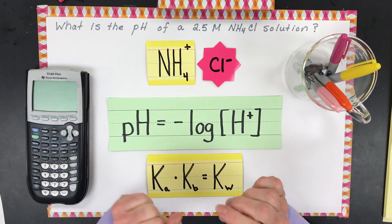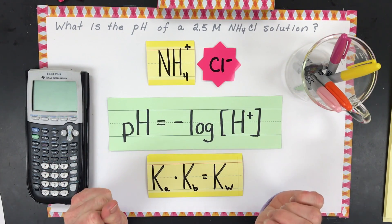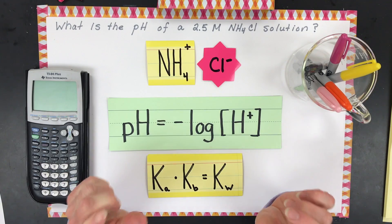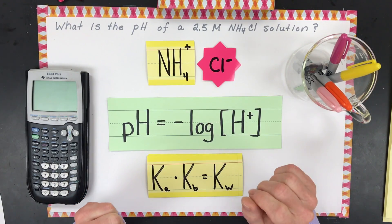Welcome back chemists. In this video I'm going to go through how to calculate the pH of an acidic salt called ammonium chloride.